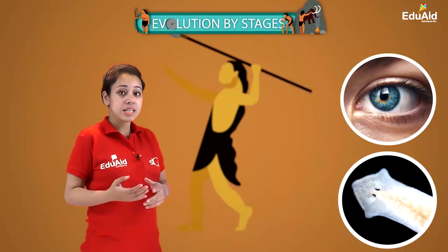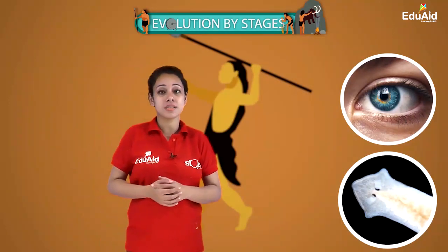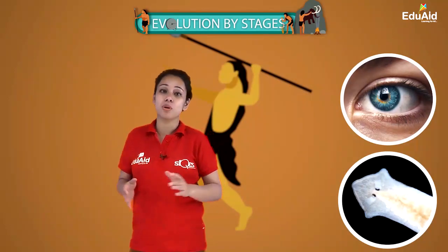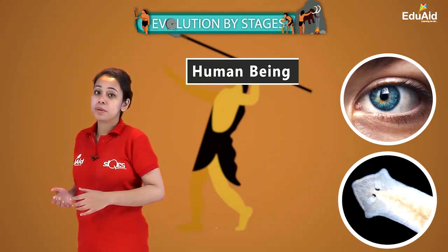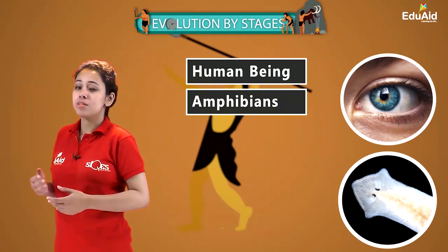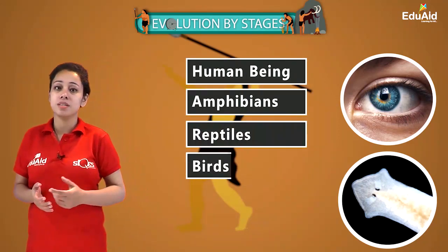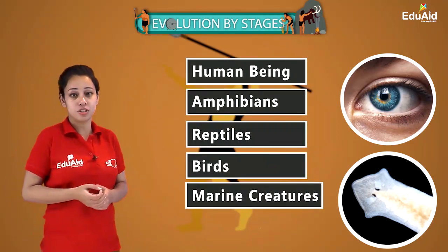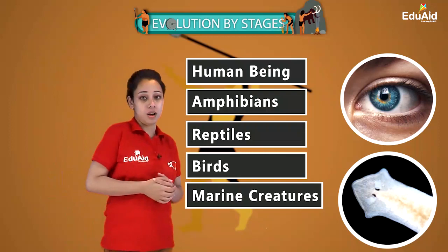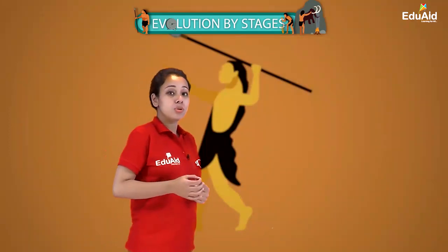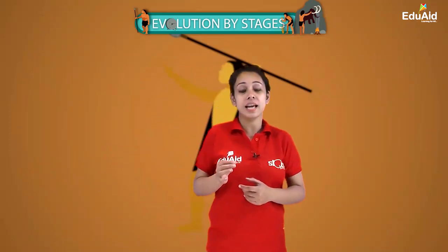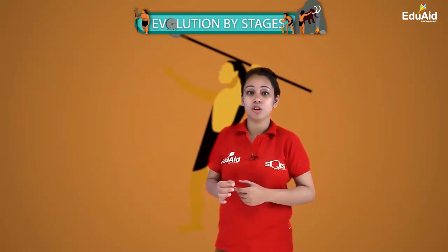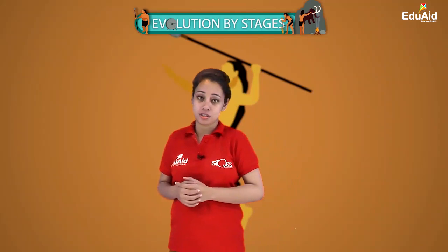We can see that eyes are present in different groups of organisms, like human beings, amphibians, reptiles, birds, marine creatures, etc. So clearly we can say that the eye is an example of evolution by stages.